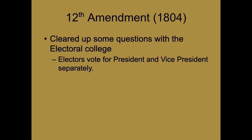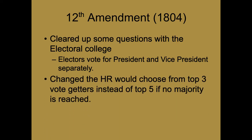The 12th Amendment just cleared up some questions with the Electoral College. Previously, whoever got the most electoral votes was president, and the second most was vice president. Well, that didn't seem to work — political opponents now had to work together. It also changed what happens if nobody gets a majority of electoral votes: it used to be the House chose from the top five vote-getters; the 12th Amendment changed that to the top three.